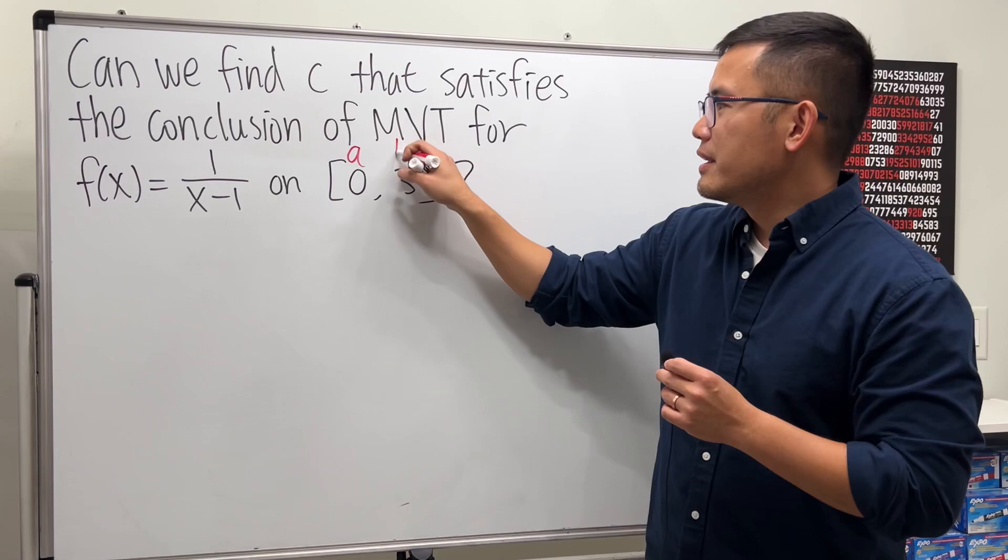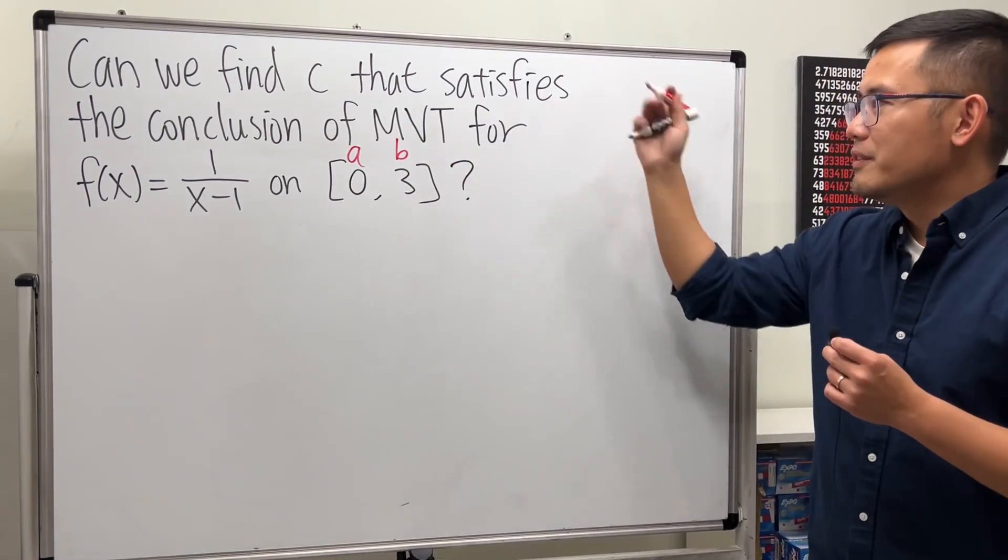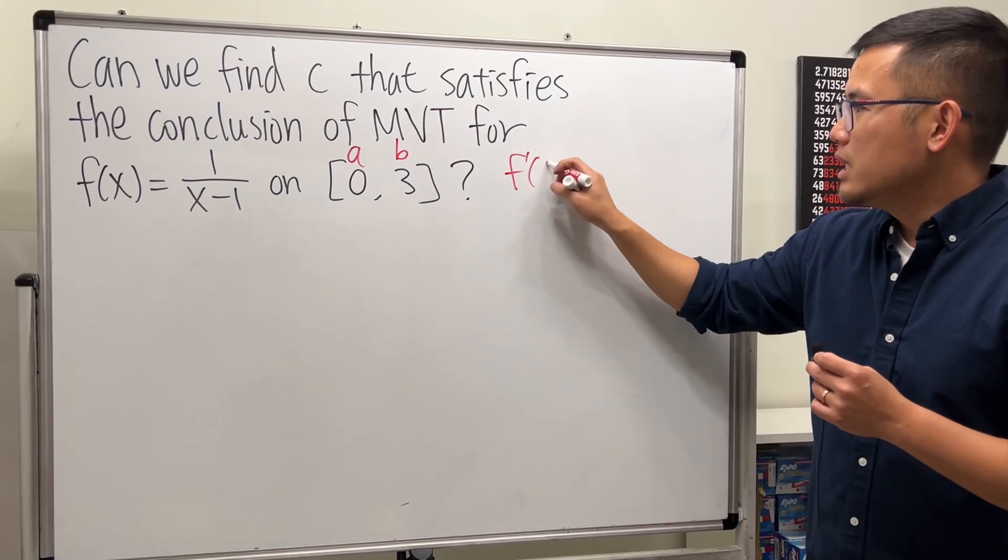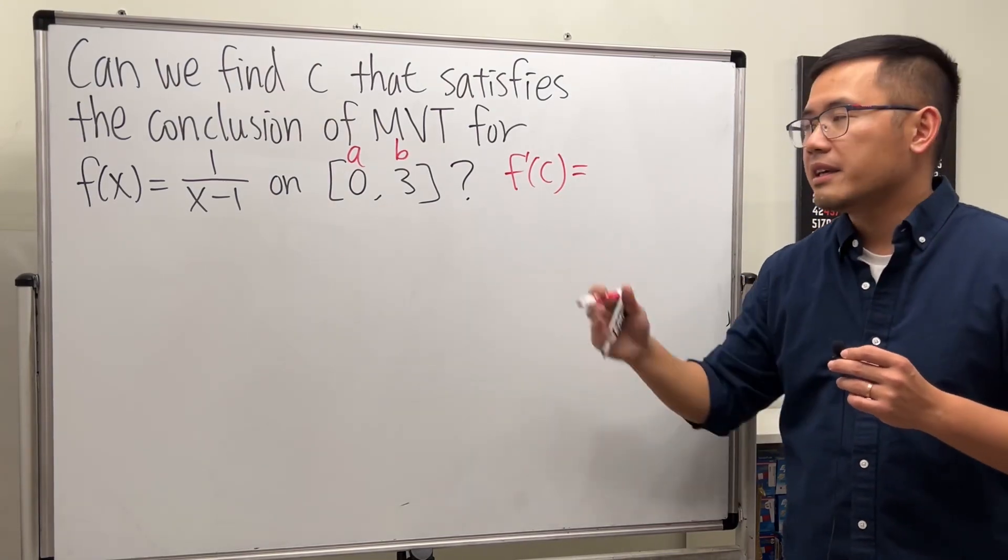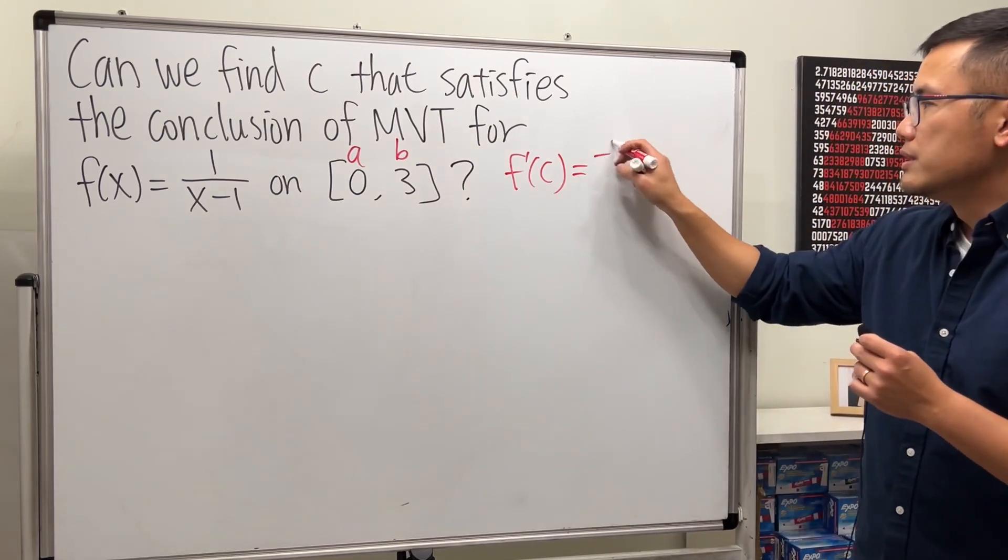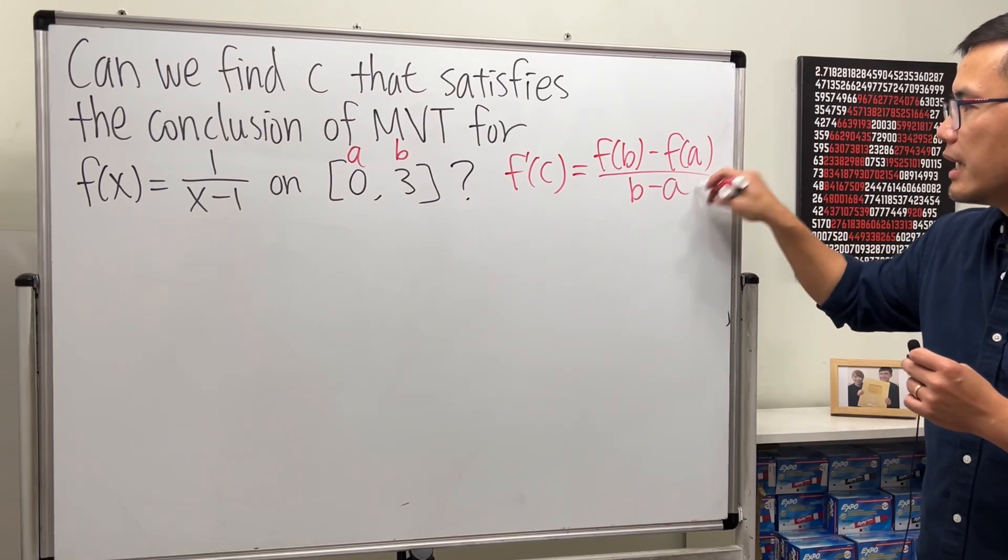First, here's the a and here's the b, and of course, let's review the conclusion of the mean value theorem. The derivative at the c value is equal to the slope of the line connecting the endpoints, which is just f of b minus f of a over b minus a.